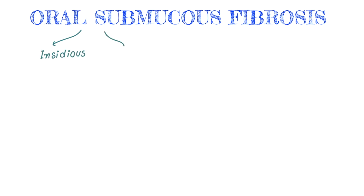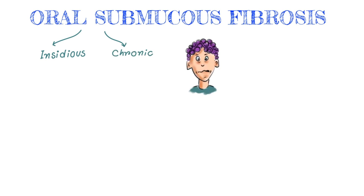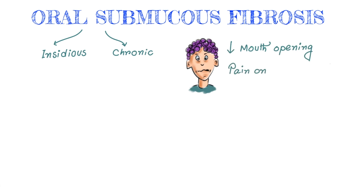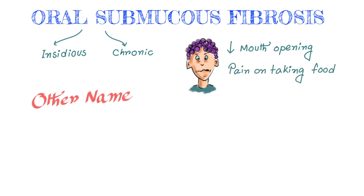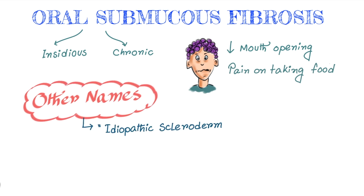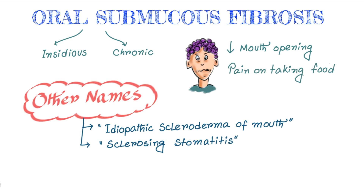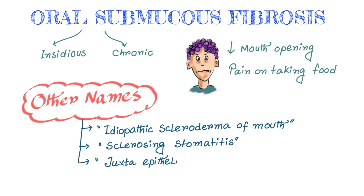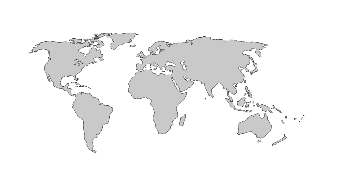OSMF is an insidious, chronic, progressive and potentially malignant disease, which can cause progressive narrowing of mouth and pain during taking food. It is also called idiopathic scleroderma of mouth, or sclerosing stomatitis, or juxtaepithelial fibrosis. It is now globally accepted as an Indian disease due to significantly high areca nut chewing habit.